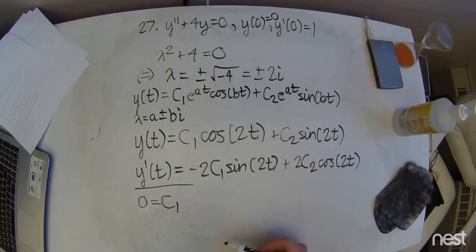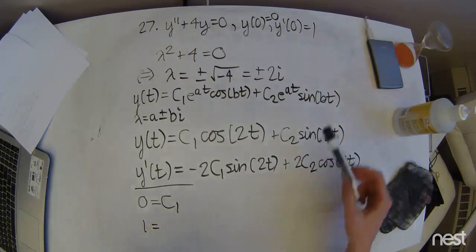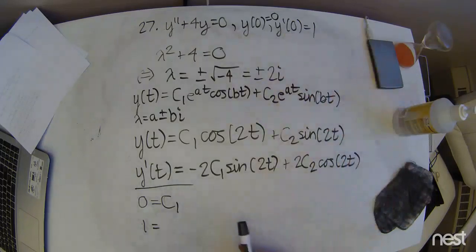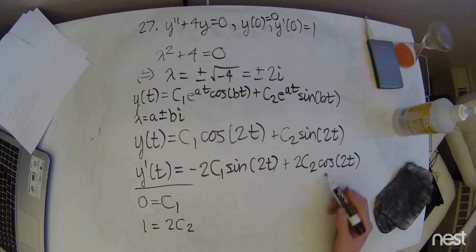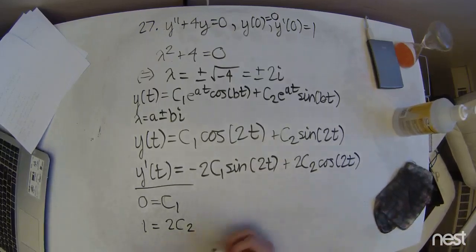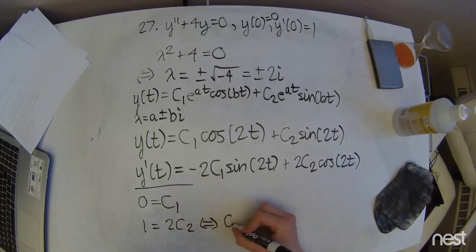Now we're going to plug in the initial condition for the first derivative. That's going to be 1 equals, now this is, of course, evaluating it at 0. So then sine cancels out, so then we're going to get 2c2 because cosine of 0 is 1. So that ends up just being c2 equals 1 half.